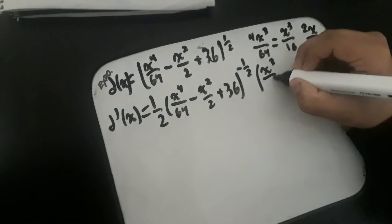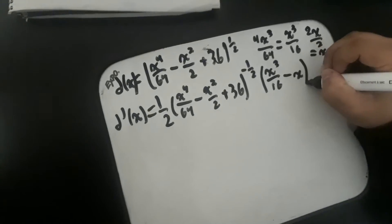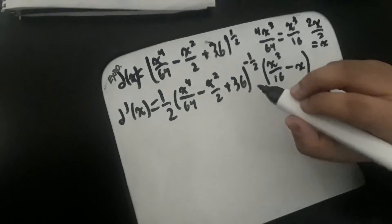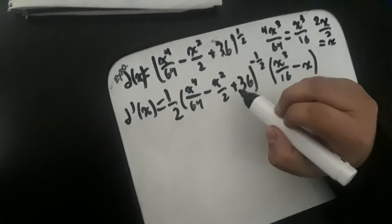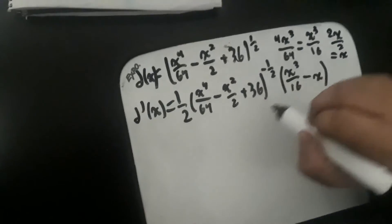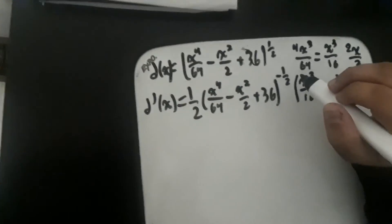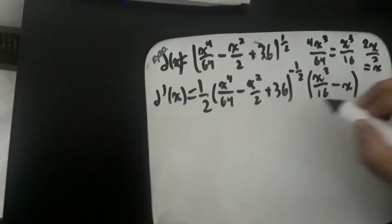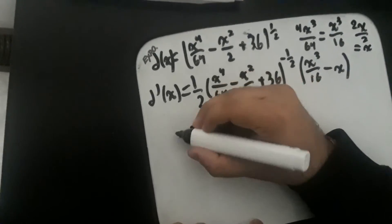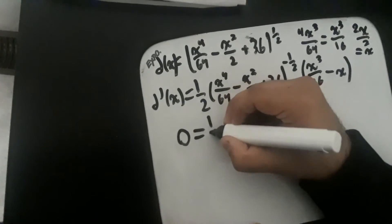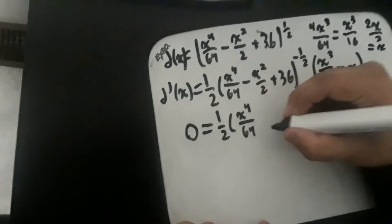Because this is the derivative of the function and we're trying to find the x value at a turning point, this derivative would end up being equal to 0. So we set it equal to 0 and we rewrite this function.